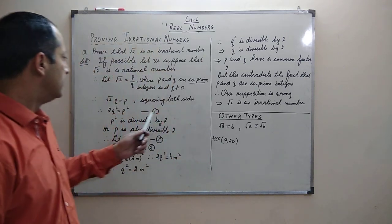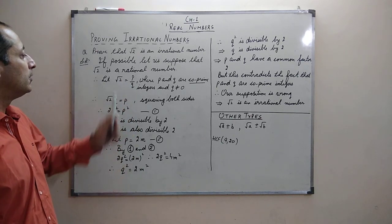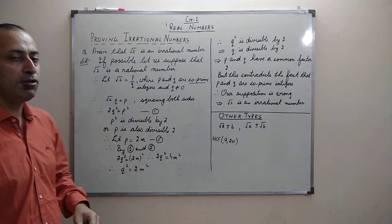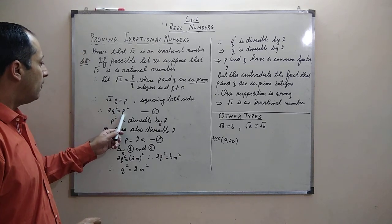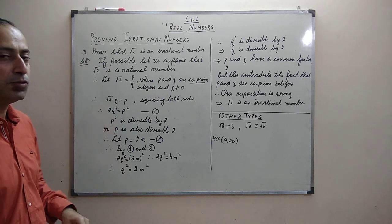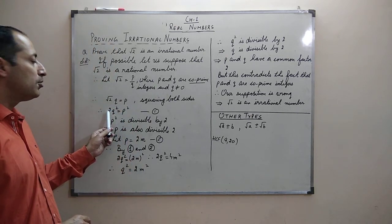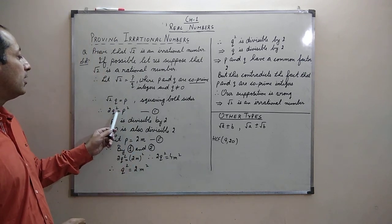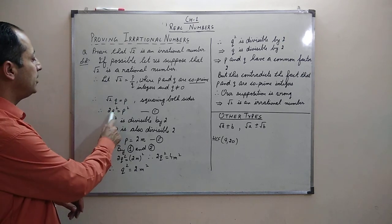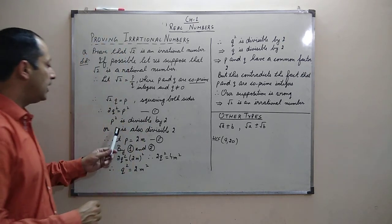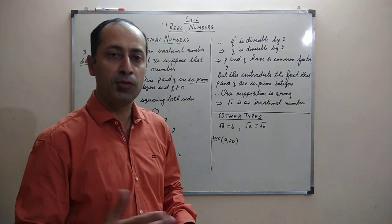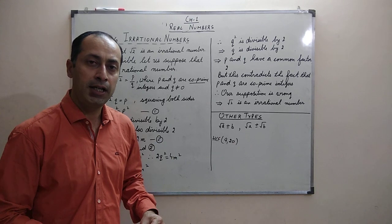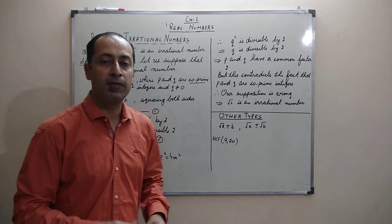Multiplying both sides by q, we get root 2·q = p. Squaring both sides gives 2q² = p². So p² is equal to 2q², meaning p² is divisible by 2. Since p and q are co-prime integers, p² is not divisible by q², so p² is divisible by 2. If the square of any number is divisible by 2, then the number itself is also divisible by 2, so p is divisible by 2.